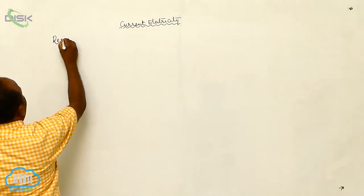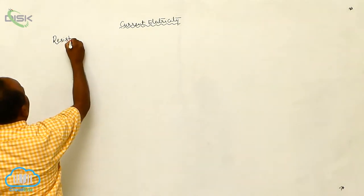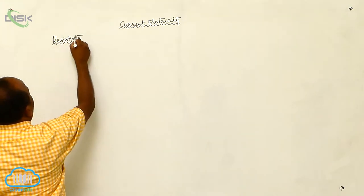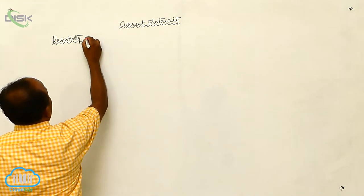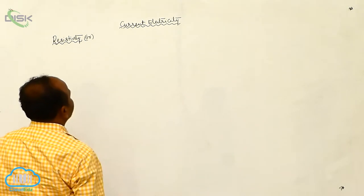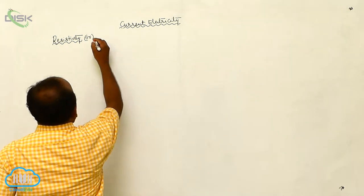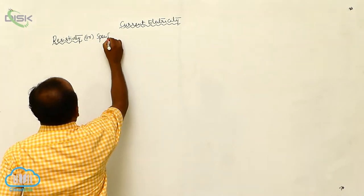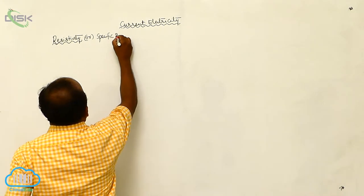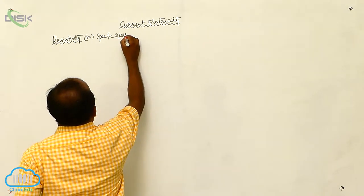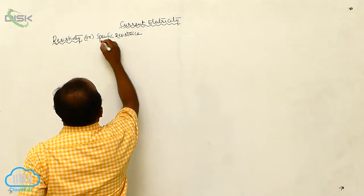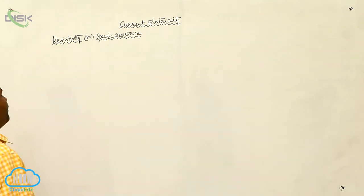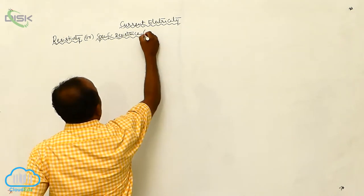What is resistivity? Resistivity is also known as specific resistance. It is represented by rho.